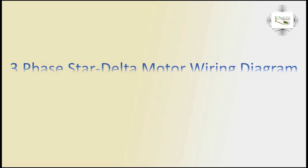Hello viewers, today I explain the three-phase star-delta motor wiring diagram. Three-phase: first phase is red, second phase is yellow, third phase is blue, or neutral.